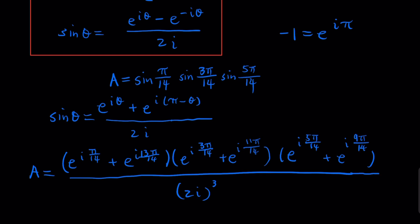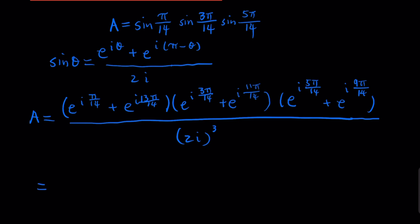Now how do we further simplify? Take out the common terms. That's going to be, for the first one, you can take out e^(iπ/14), so that's going to be e^(iπ/14), and what you're remaining here is going to be 1 + e^(i12π/14). The second term, you can take out e^(i3π/14), and what you get is 1 + e^(i8π/14).